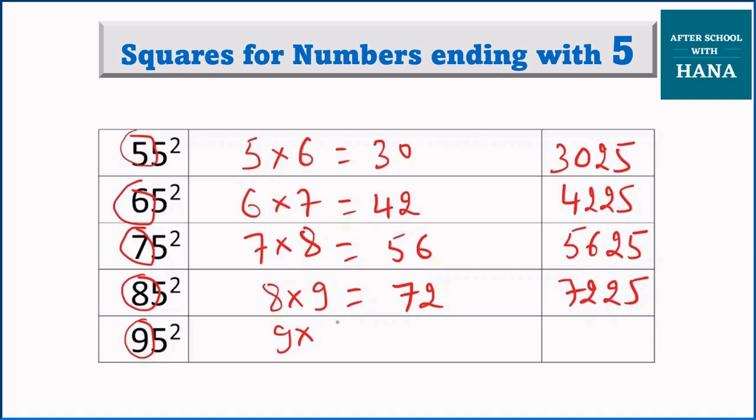We have now 95 squared. 9 multiply by 10 is equal to 90. So this becomes 9025. Now you know how to find square for numbers ending with 5.